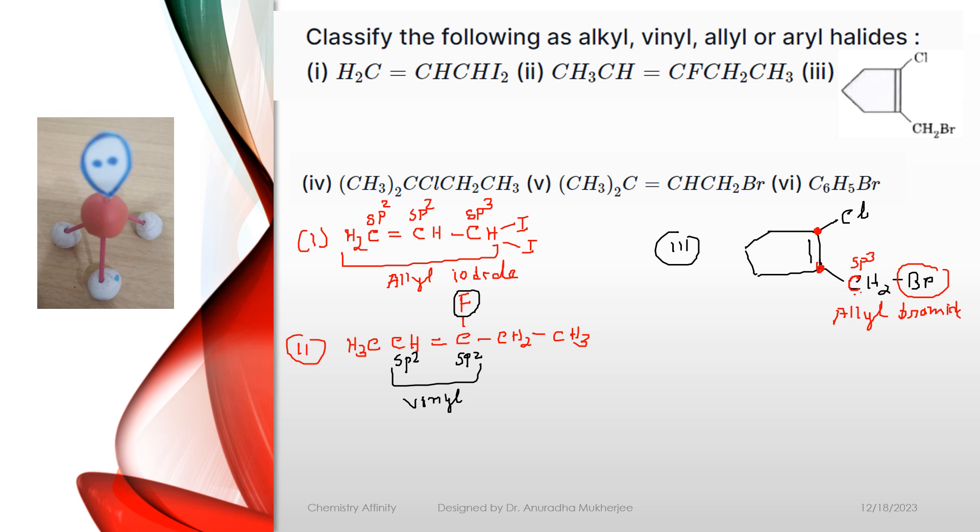Now, if I look into the chlorine side, so this is Sp2 carbon, this is Sp2 carbon, Sp2 carbon is connected with chlorine, so we can say this is vinyl chloride. So this molecule contains both vinyl and allyl groups, so it is an allyl bromide and also a vinyl chloride.